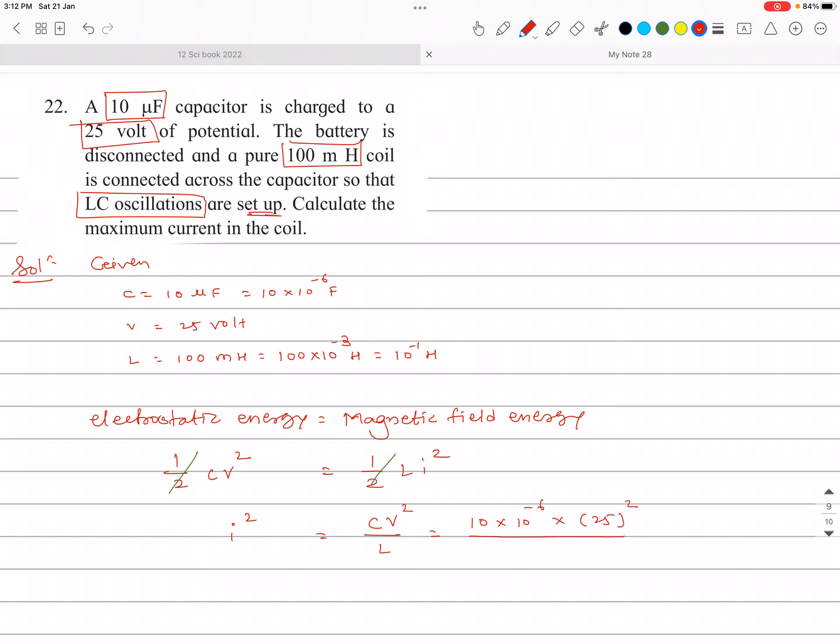Divide by L. L is here 10 raised to minus 1. So after simplifying this, we are getting I squared as 25 squared is 625, and this 10 raised to minus 5 divided by 10 raised to minus 1, so it is 10 raised to minus 4. So this is I squared.